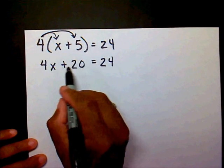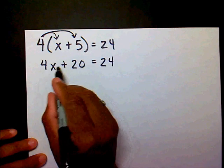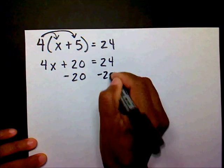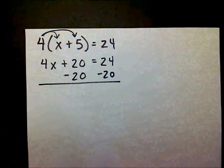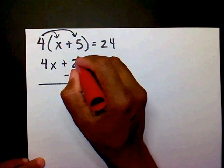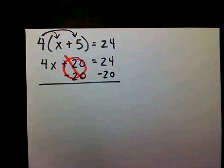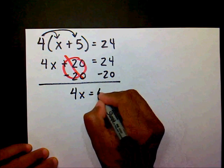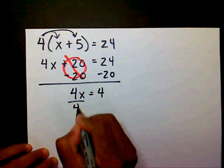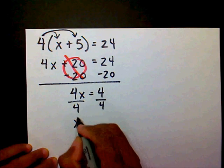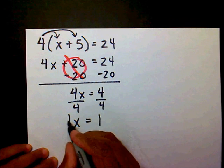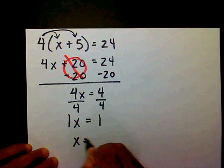I want to first move my constant that's here on the side with the x. So I'm going to subtract 20 on both sides. My 20s are going to cancel out. That's going to leave me with 4x equals 24 minus 20 is 4. I'm going to divide both sides by 4. So 4 divided by 4 is 1, x equals 1. I can simplify this more by just writing x equals 1.